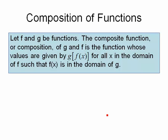A composition occurs when you have two functions, F and G, and the composite function or the composition of G and F is a function whose values are given by G of F of X. In other words, you put F of X into G. This makes sense for all X in the domain of F such that F of X is in the domain of G. In other words, if we plug a number into X and get an output from F, it has to make sense to be able to put that into G.